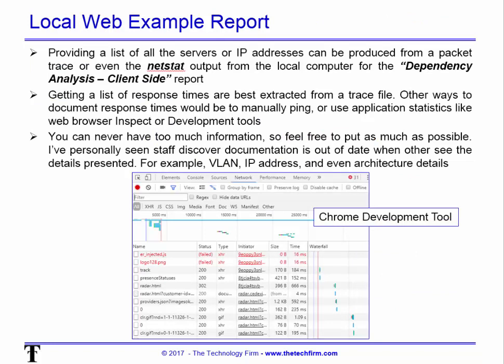You'll also want to provide a list of all the servers and IP addresses you're accessing for your dependency analysis. You can get that through various ways: netstat is a popular method, capturing packets is another, or you can use Chrome's developer tools — literally F12 on the keyboard. Internet Explorer has the same thing. You can actually see how long things are taking: the time, what you're doing, the status, and so on. This also helps document the application.